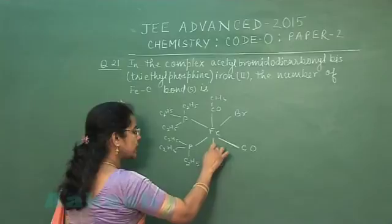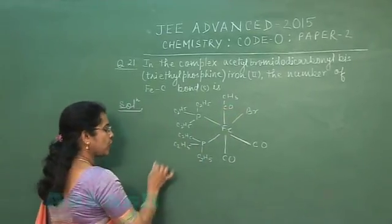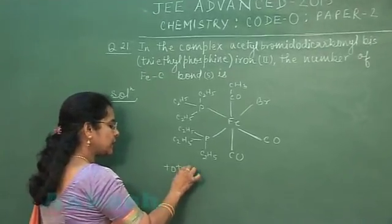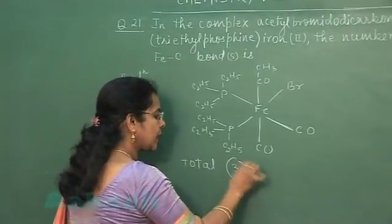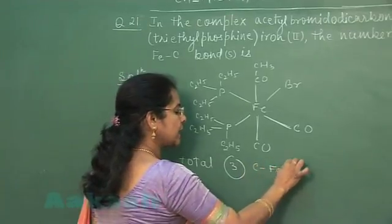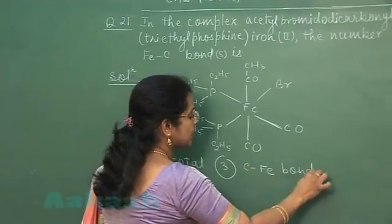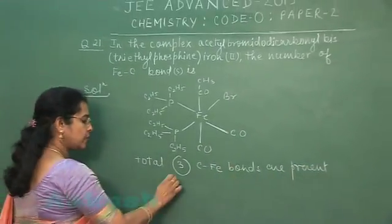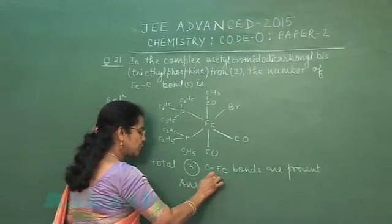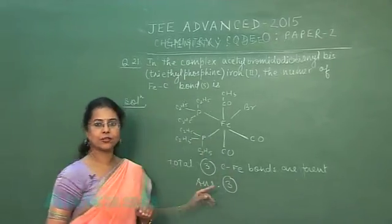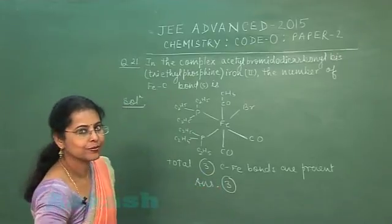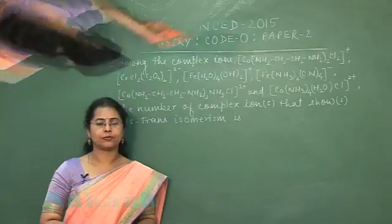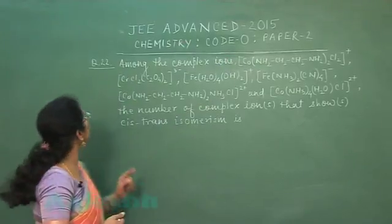One Fe-C bond is from the acetyl group, another from one carbonyl CO, and the third from the second carbonyl CO. According to the structure of the complex, a total of 3 iron-carbon bonds are present. So the answer to question 21 is 3. Moving to the next question, question number 22.